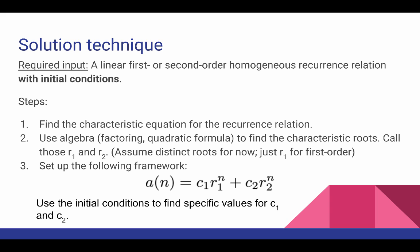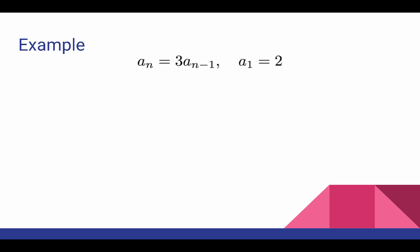This leaves only c1 and c2 as undetermined numbers. And our job is to find the values of c1 and c2 that satisfy the initial conditions. So let's look at an example where we have a_n equals three times a_{n-1}. And a single initial condition of a1 equals two.